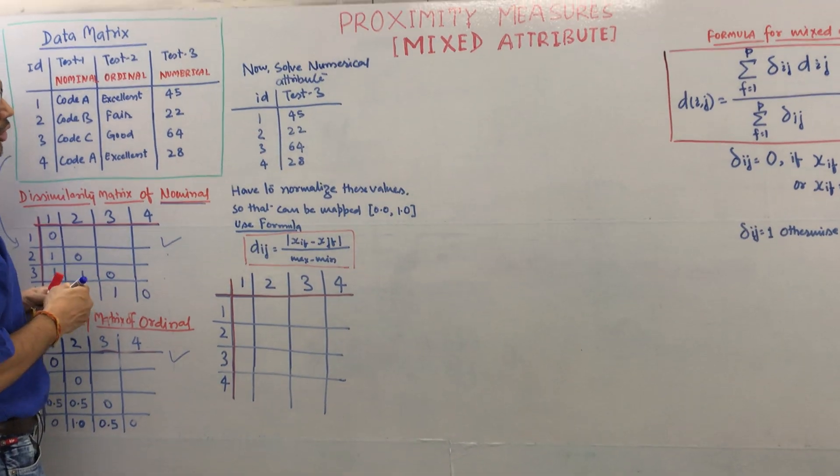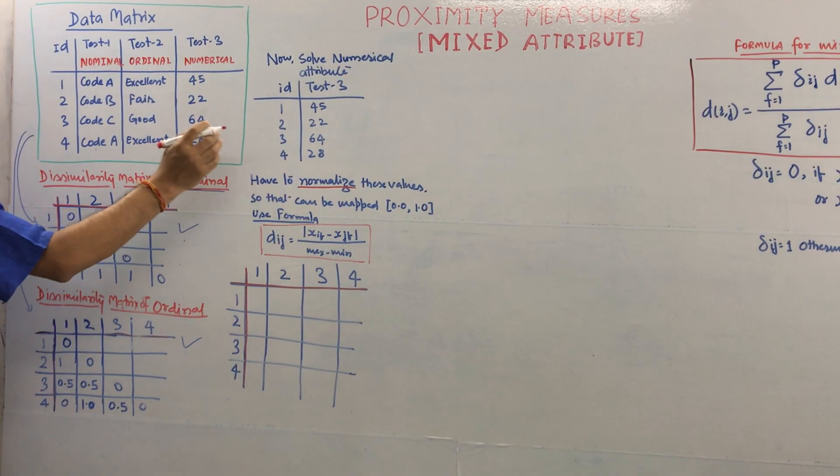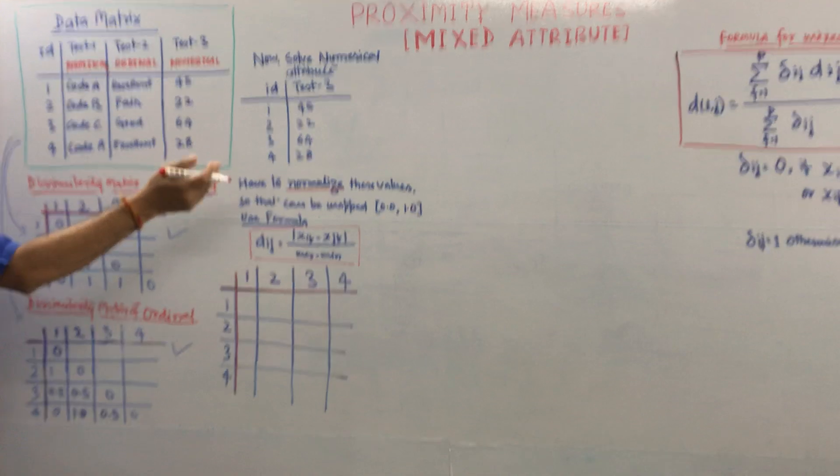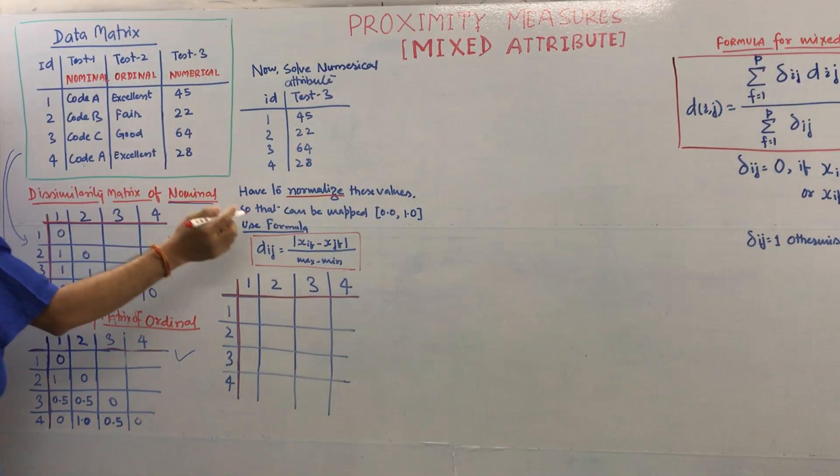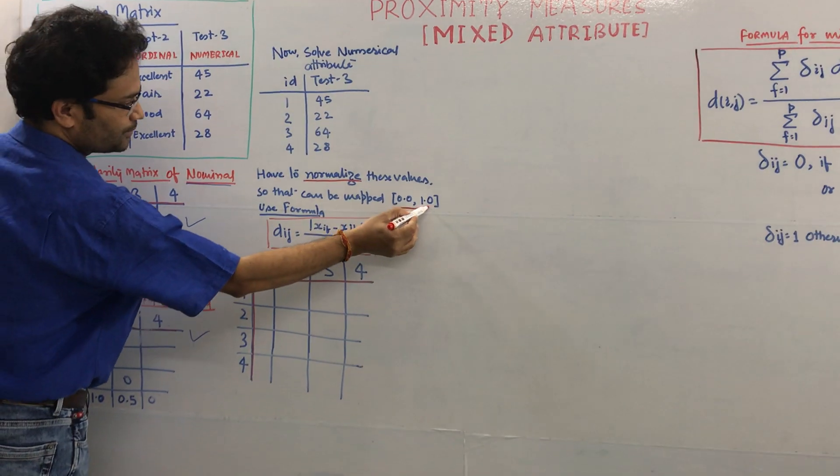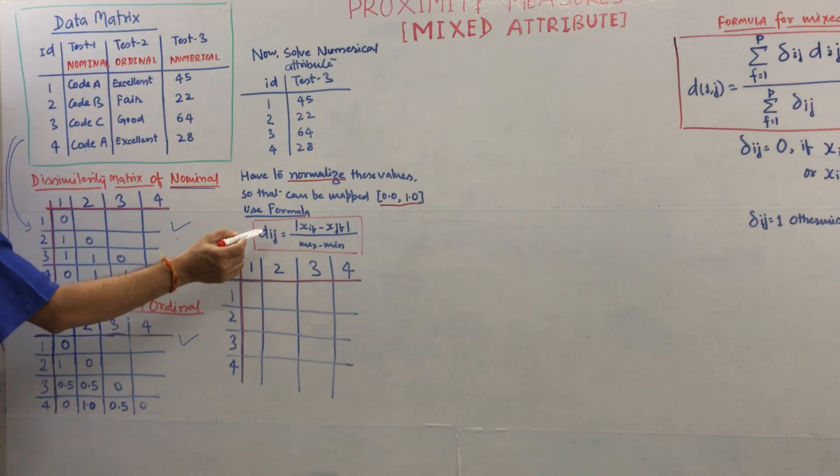We have to normalize this data. What is the meaning of normalize? Means in such a way we have to frame this data between 0 to 1. How to do that? With the help of this formula.